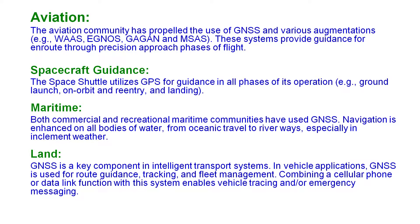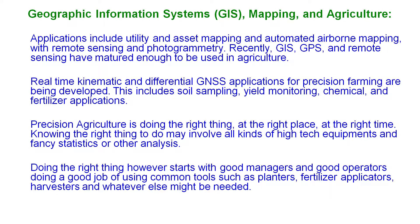In GIS (Geographical Information System), GPS is the backbone. GIS is used in earth sciences, mapping, agriculture, and remote sensing. GPS supports automated airborne mapping, remote sensing, photogrammetry, and real-time global navigation applications. In agriculture, GPS and GIS are used together to provide accurate field data and monitoring.